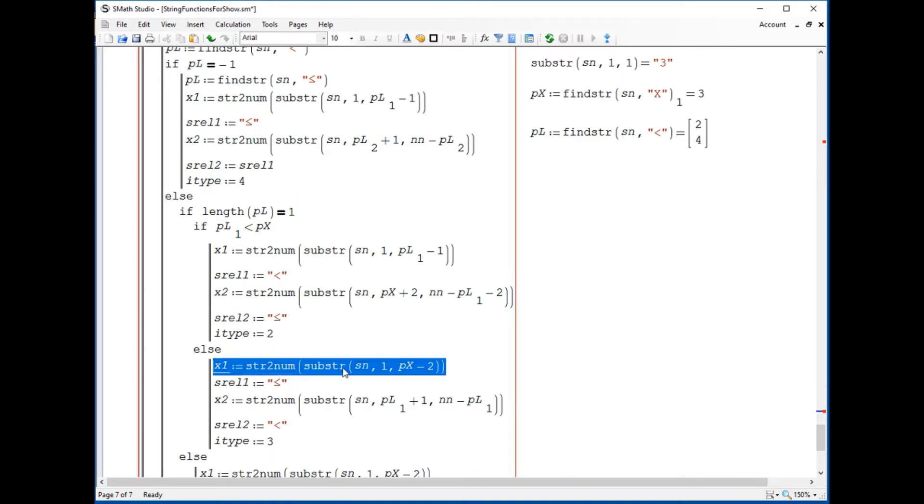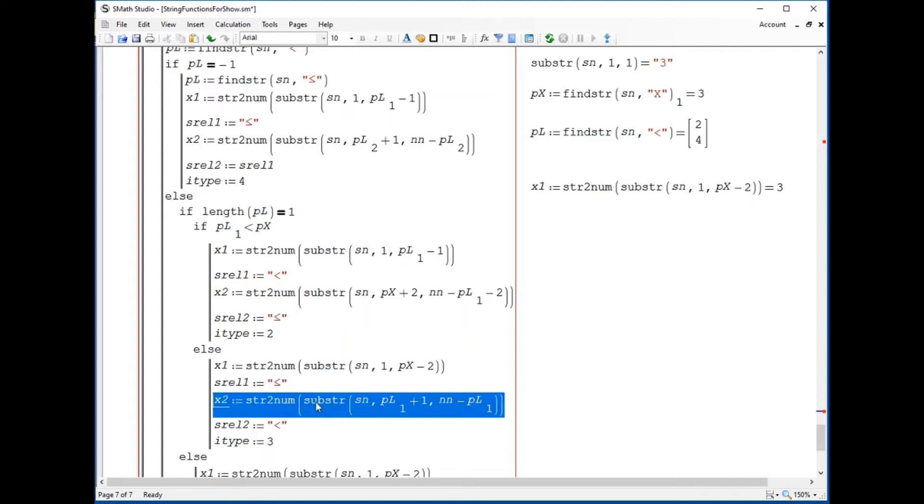And then in else, we're going to be here and say in control. Okay, the first element is a 3, the first relationship is less than or equal. The second element here would be...